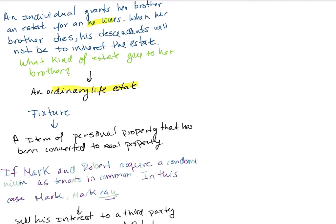Be aware that if someone offers you an ordinary life estate, it may be the only option available, but understand what you are signing. If you sign up for an ordinary life estate on a house, that property is yours only for as long as you live. If you die, your family will be left without anything.